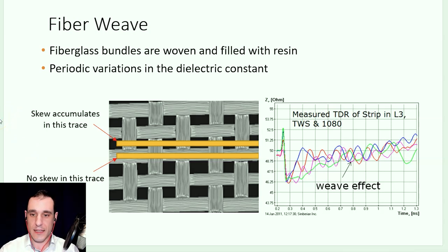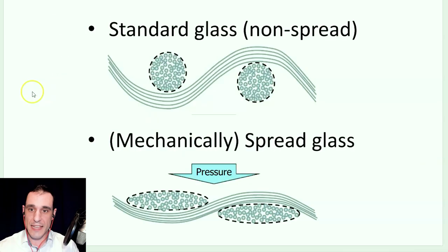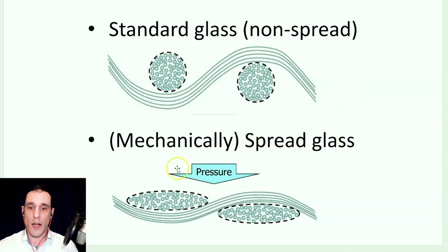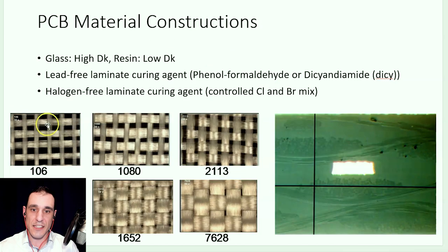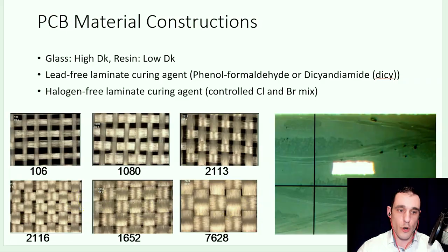So how do manufacturers get to a very tight glass weave? There's a type of glass called spread glass — we have non-spread, and then we have mechanically spread glass. Spread glass essentially spreads out all of these fiber bundles when the material is pressed. It's that pressure that causes these bundles to spread out, which nicely fills up all of the space in these weave constructions. In general, for higher-frequency and high-speed applications, we care about using materials along the bottom row of that table.